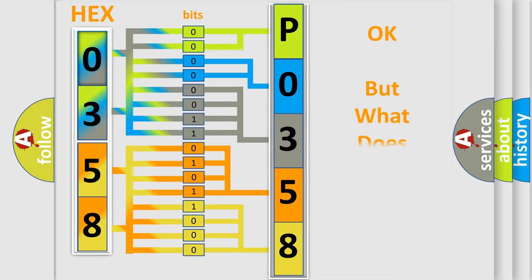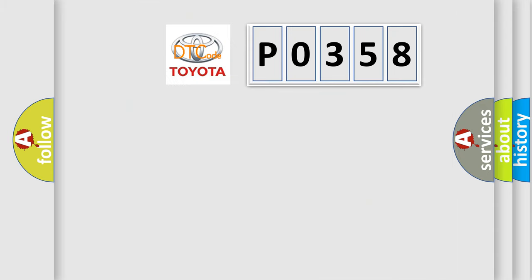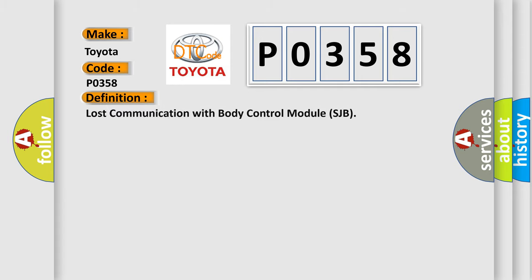The number itself does not make sense to us if we cannot assign information about what it actually expresses. So, what does the diagnostic trouble code P0358 interpret specifically for Toyota car manufacturers? The basic definition is: Lost communication with body control module SJB. And now this is a short description of this DTC code.